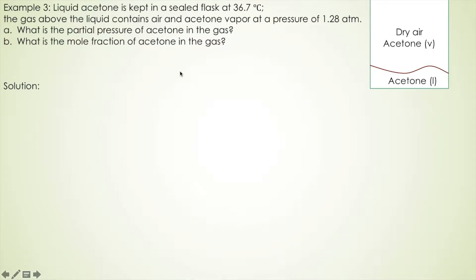Given liquid acetone is kept in a sealed flask at 36.7 degrees Celsius, the gas above the liquid contains air and acetone vapor at pressure 1.28 atm, asking for partial pressure of acetone in the gas phase.